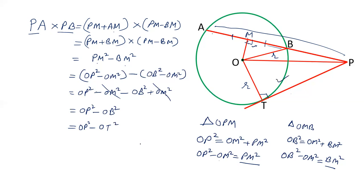Now this triangle OPT, triangle POT: OP squared is equals to OT squared plus PT squared. Therefore OP squared minus OT squared is PT squared.